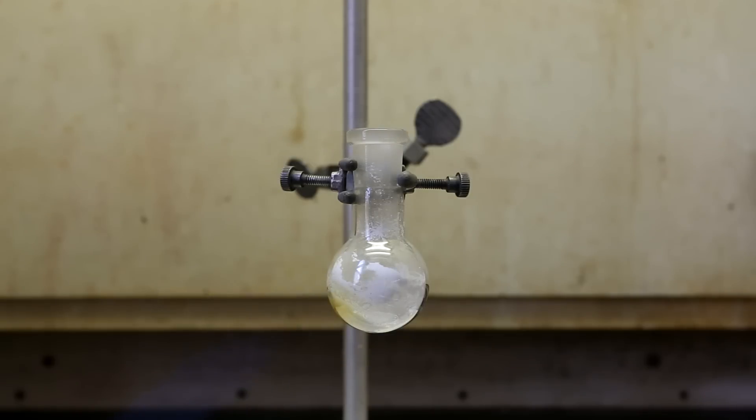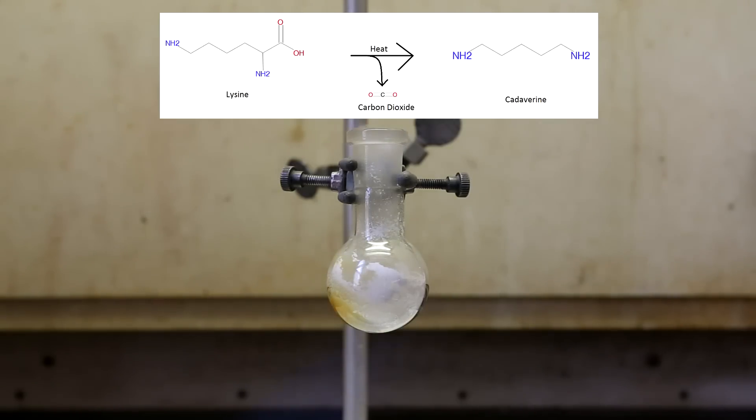The yellow color is the cadaverine oil that is forming. Cadaverine is formed from lysine by a decarboxylation reaction. Lysine is an amino acid and like all amino acids contains an amine group and a carboxylic acid group. These two groups logically give the name amino acid.